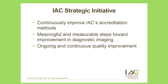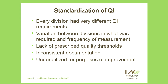IAC's strategic initiative is to continuously improve the accreditation methods with meaningful and measurable steps towards improvement in diagnostic imaging and ongoing and continuous quality improvement. As part of this effort, standardization of QI has been implemented across every division. Up until now, divisions had very different QI requirements. There was variation between divisions in the frequency of measurement, a lack of prescribed quality thresholds, and inconsistent documentation across divisions. All of this led to underutilization of QI for purposes of improvement.